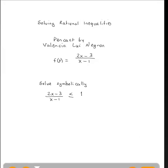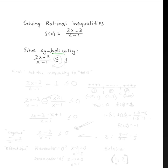We want to take a look at solving a rational inequality. We're given a function f of x equals 2x minus 3 divided by the quantity x minus 1. Now we want to solve symbolically, meaning we're going to be doing some algebra. We want to know when is 2x minus 3 divided by x minus 1 less than or equal to the number 1. We must be cautious with these rational inequalities.